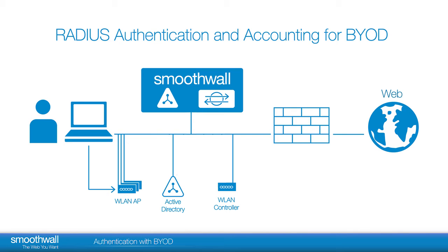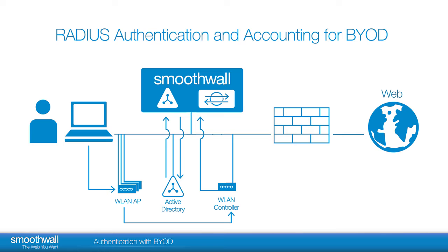The user connects to an SSID, or wireless LAN. The wireless LAN access point communicates back to the WLAN controller. The wireless controller attempts to authenticate the user via Smoothwall. The Smoothwall confirms with Active Directory. It can be accepted or rejected. If it's accepted, a message is passed via the Smoothwall to the access point and the wireless controller, granting them access to the network.